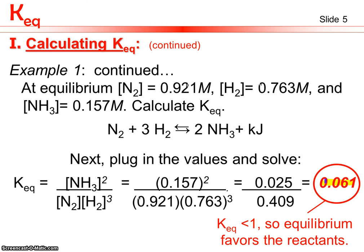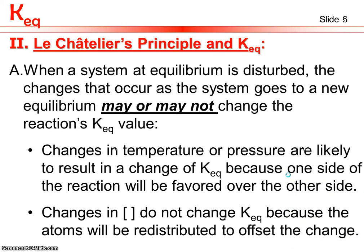Since KEQ is less than one, equilibrium favors the reactants. When a system at equilibrium is disturbed, equilibrium will shift. A change in temperature or pressure is likely to change KEQ because one side of the reaction is favored. However, when you change the concentration of a reactant or product, KEQ will likely stay about the same, because the atoms added or removed will be redistributed to offset the change.